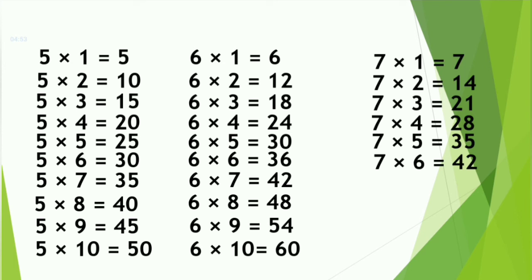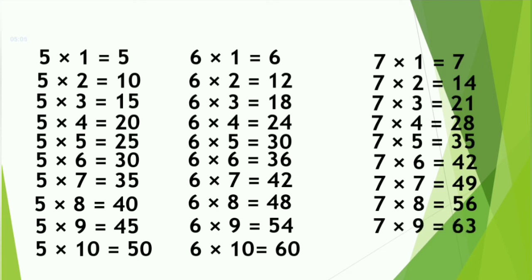7 6s are 42. 7 7s are 49. 7 8s are 56. 7 9s are 63. 7 10s are 70.